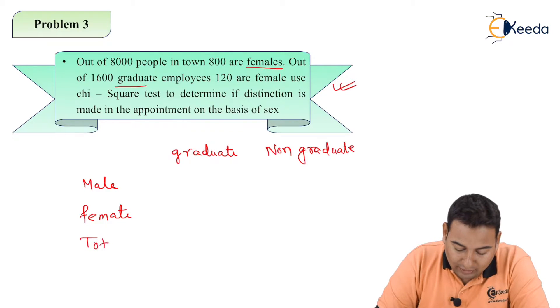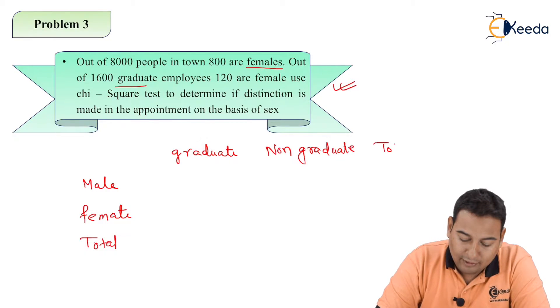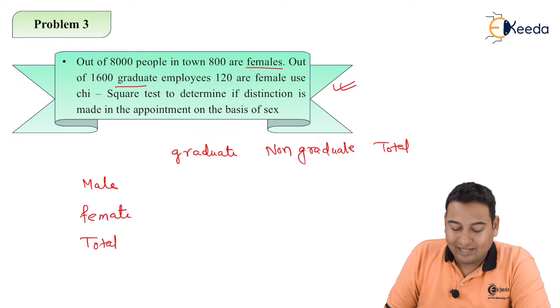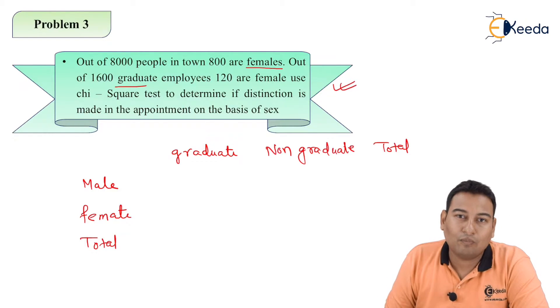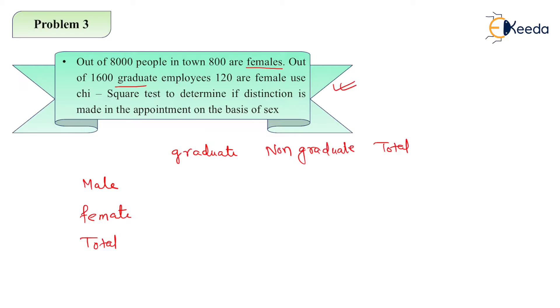I am going to add a total here and total here. Let's read the data and try to form this table. Out of 8000 people in a town, so there are 8000 in total. 800 are females, so female total is 800. That means 8000 minus 800 equals 7200 are males in a town.